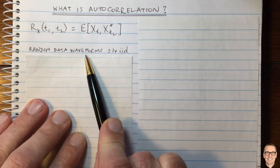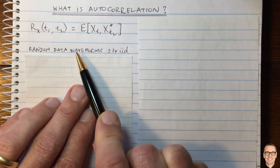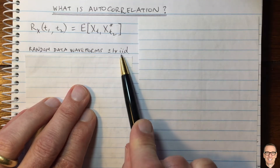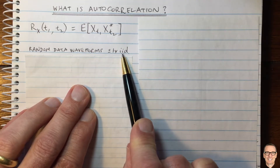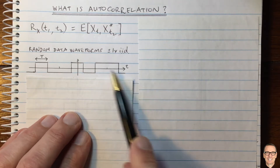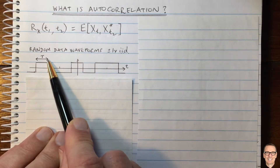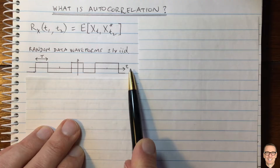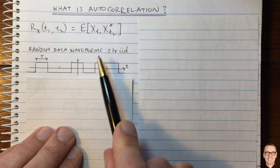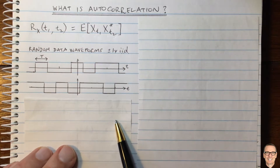Let's think about a random data waveform where the data is binary, represented by plus one volt or minus one volt. The data is random — independent and identically distributed. Here's a possible waveform where each data bit is sent for a capital-T duration. This is just one of the waveforms that could be possible, and of course it's random.